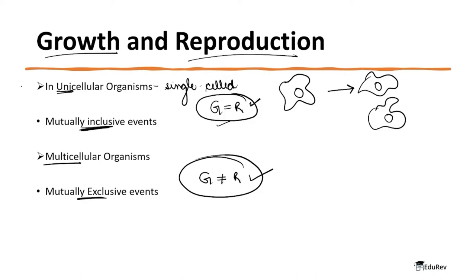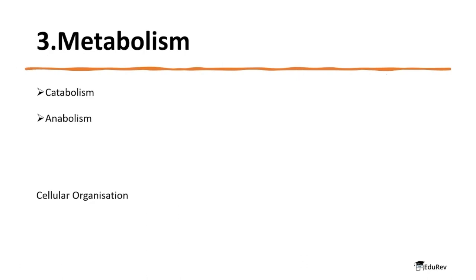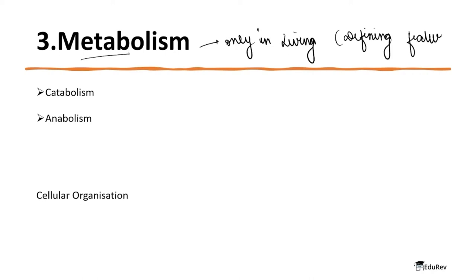This is actually asked in exams: in multicellular organisms, growth and reproduction are mutually exclusive or inclusive events? The answer is mutually exclusive. The next factor is metabolism — it is found only and only in living things, and that is why it is a defining feature. It is of two types: catabolism and anabolism.